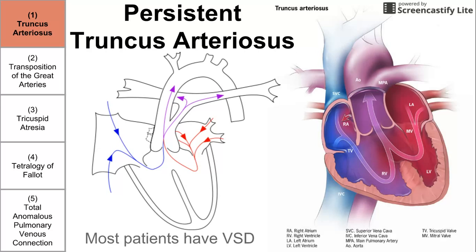Truncus arteriosus is labeled with a one because we have one big vessel in the middle of the heart. This big vessel is called the truncus arteriosus, which comes from the heart during the developmental stage. Usually this truncus arteriosus is split with a wall that separates the aortic and the pulmonary arteries, and this did not happen in people who have this disease. So we call it a persistent truncus arteriosus, and blood mixes between the two ventricles before going out into the pulmonary and systemic circulation.